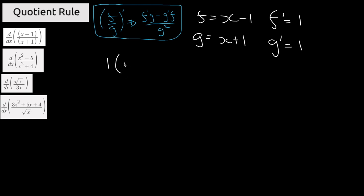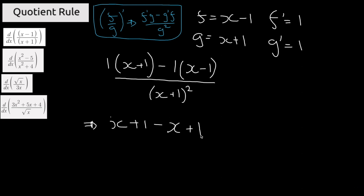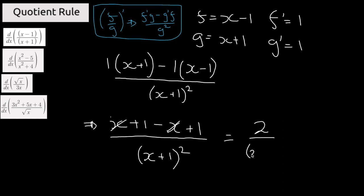We have 1 times (x plus 1) minus g prime which is 1 times f which is x minus 1, divided by g squared which will be (x plus 1) squared. Expanding the brackets: x plus 1 minus x, and then we have a negative times negative 1, giving plus 1. So x minus x cancels out, and we're left with 1 plus 1 equals 2, giving 2 divided by (x plus 1) squared as the final solution.